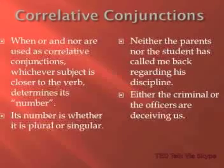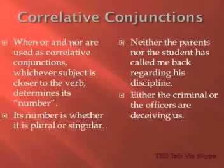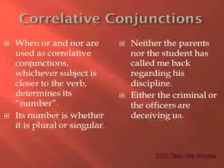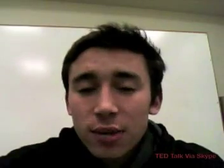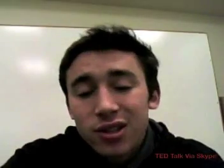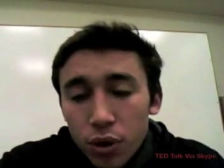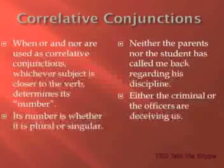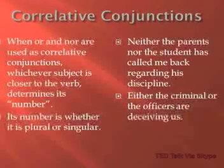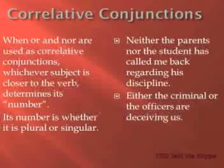The next step to either or neither is correlative conjunctions. Correlative conjunctions are words like 'or' and 'nor.' So when you use 'or' or 'nor,' whichever subject is closer to the verb determines its number — whether it's plural or singular. For example, 'neither of the parents nor the student has called me back regarding his discipline.' The parents are plural, but the student is singular, so you say 'student has' instead of 'parents have,' since 'student' is closer to the verb. Another example: 'either the criminal or the officers are deceiving us' — 'officers are,' since it is closer than 'criminal' to the verb.